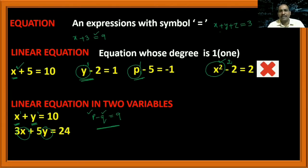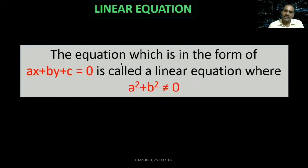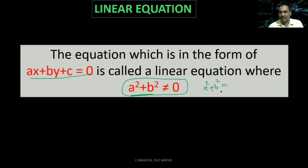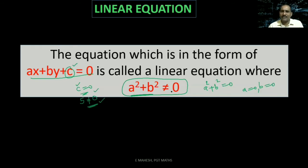The formal definition: an equation in the form ax plus by plus c equal to 0 is called a linear equation, where a² plus b² is not equal to 0. What does a² plus b² not equal to 0 mean? If a² plus b² were equal to 0, then both a and b would be 0. When both become 0, only c remains and it would not form a valid equation — for instance, 5 equal to 0 is not correct. Therefore, a² plus b² not equal to 0 means at least one of a and b should be a non-zero quantity.